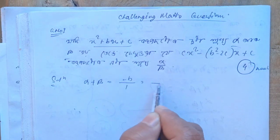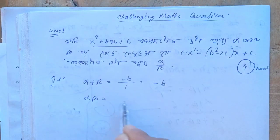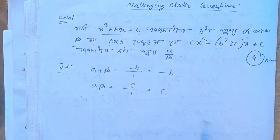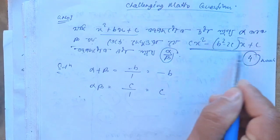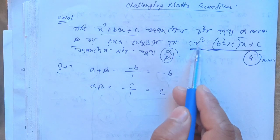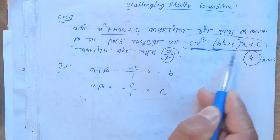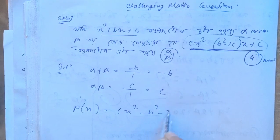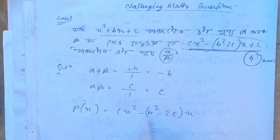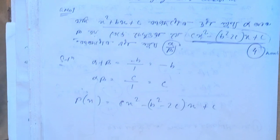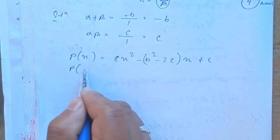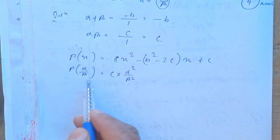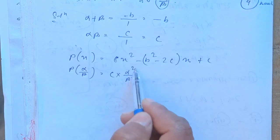Let's talk about the description. If you want to see that alpha is equal to c by a, and c by a is equal to c, then c is equal to c. Now we have to say that alpha by beta squared is equal to alpha by beta squared, and we put it on the other side: alpha by beta squared is equal to alpha by beta.